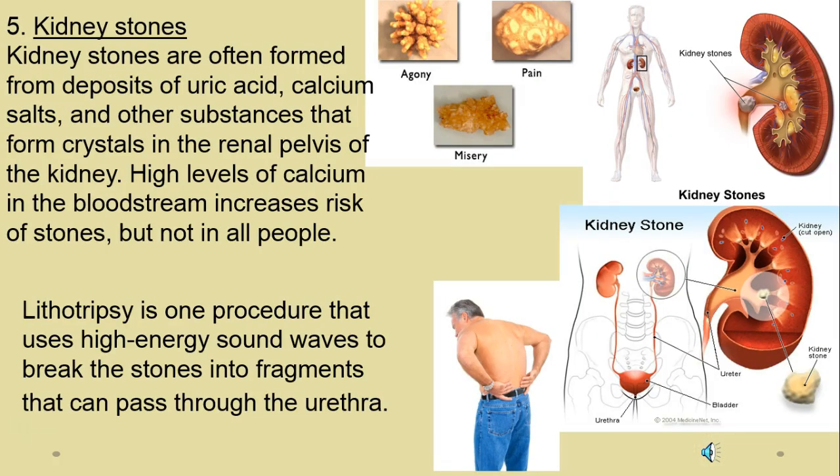Kidney stones — you might see a patient in the emergency department pacing back and forth. They're formed from deposits of uric acid coated in calcium salts, and these crystals block different parts, generally the ureter. Some people get them and some don't — it's not all dietary; some people cut out oxalates or reduce calcium and still get them. One treatment method is lithotripsy, which uses a high-energy wave to break the stones, or sometimes a basket is taken up the urethra to pull them out.